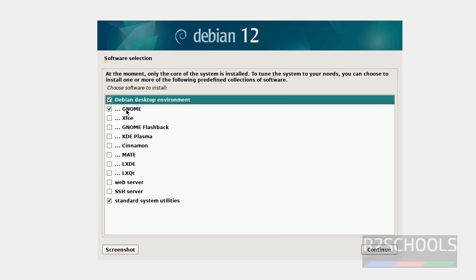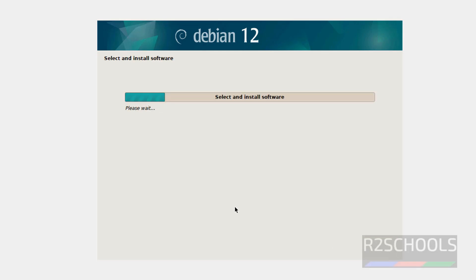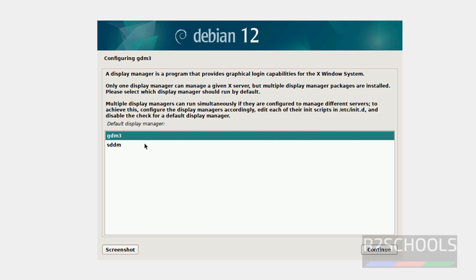For software selection, by default the Desktop Environment is set to GNOME. You can also choose XFCE, KDE Plasma, Cinnamon, MATE, LXDE, or LXQT. I am selecting KDE Plasma, then click on Continue. Installation may take some time. For the default display manager, I am going with GDM3, then click on Continue.